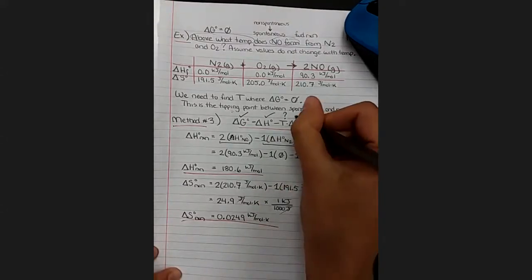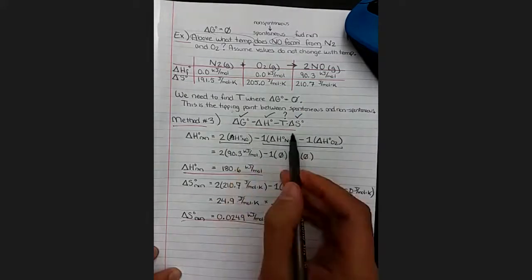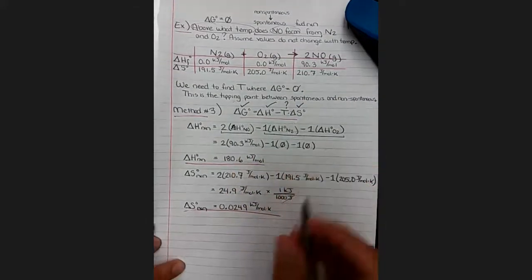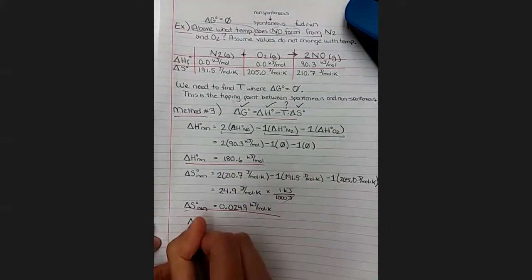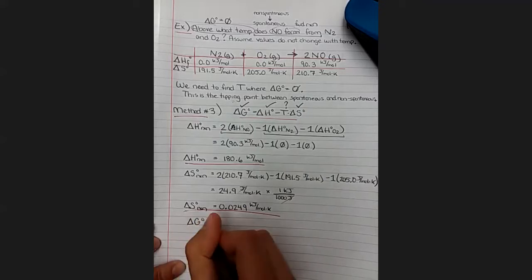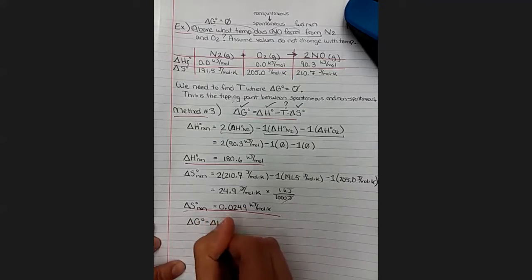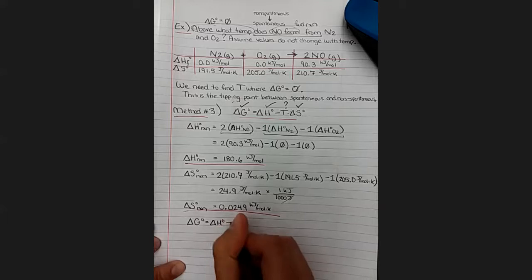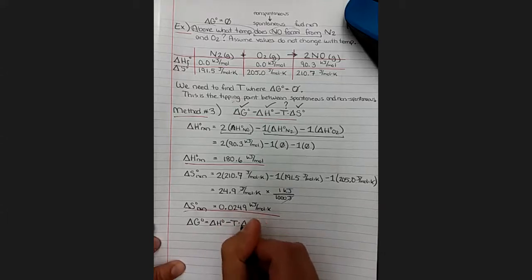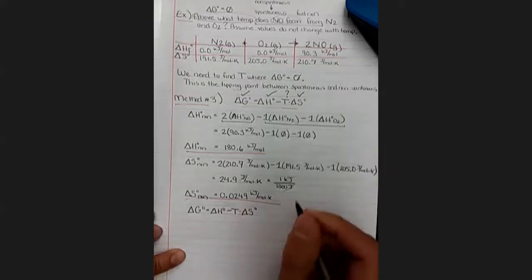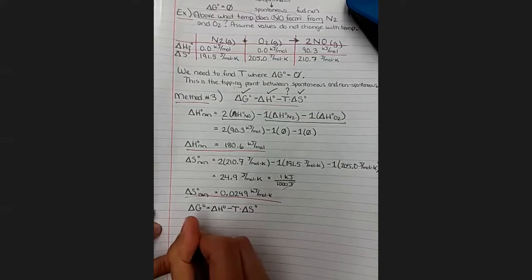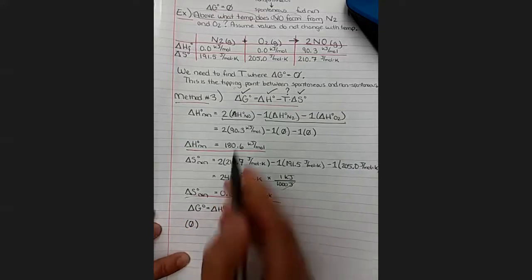Voila, all right there's our final number. So now we are ready to plug and chug into our favorite thermodynamic formula. We can play everybody's favorite game: will Rachel fit all of this on one piece of paper? All right, so we said we're going to set delta G equal to zero to look for that tipping point where we go from spontaneous to non-spontaneous.